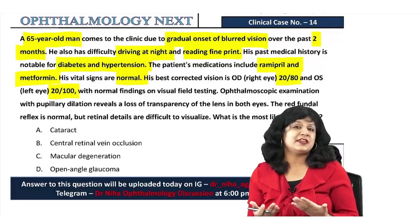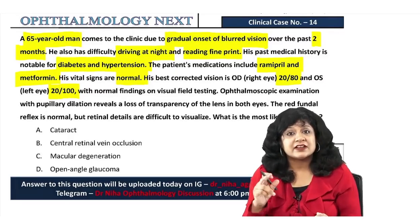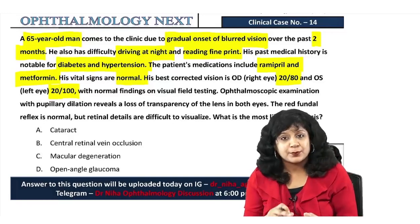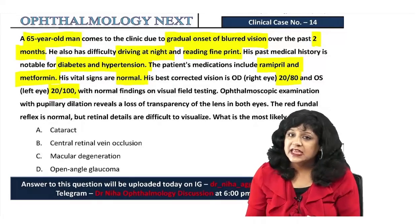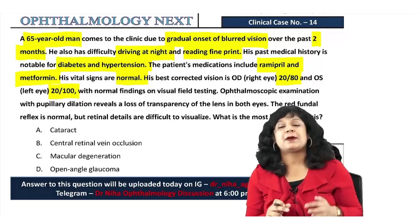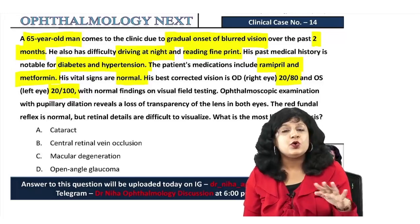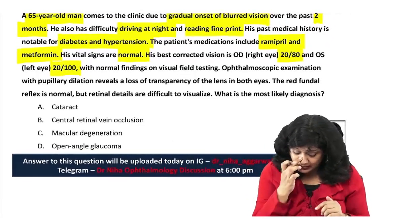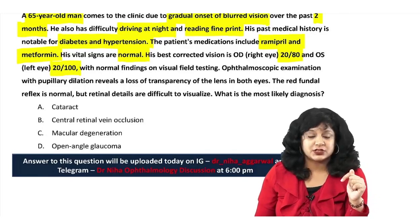If the best corrected visual acuity were 20/20, the patient would most likely have a refractive error. This patient has gradual diminution of vision with difficulty in dim light, is a known diabetic and hypertensive, and is not getting corrected by refraction — so there is no refractive error.